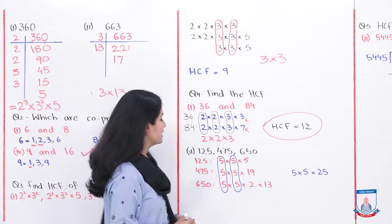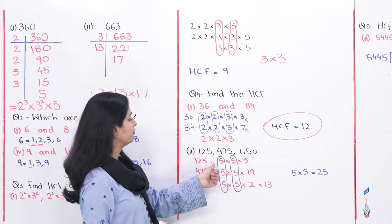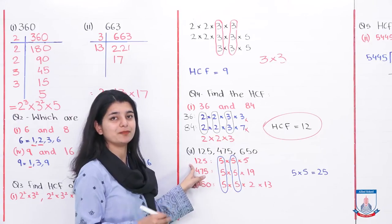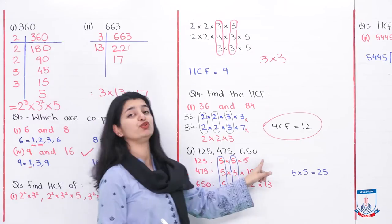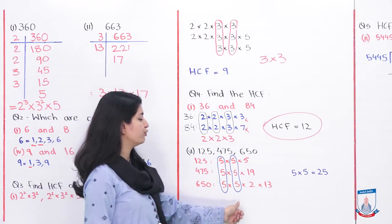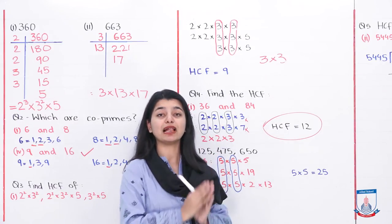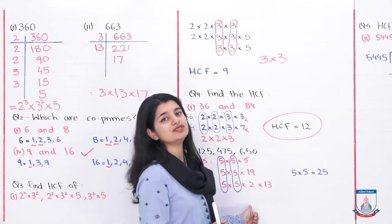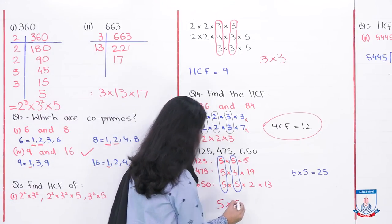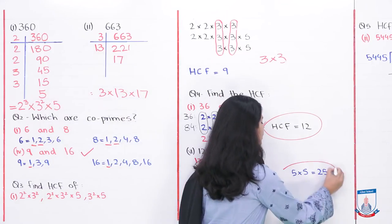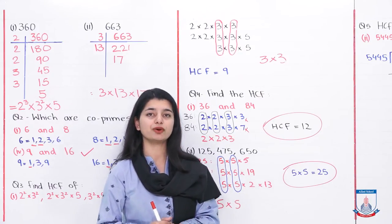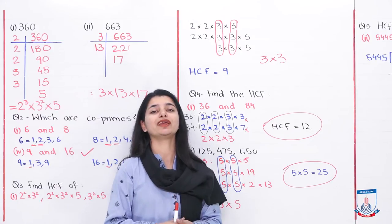Let's look at one more example in part 6: 125, 475, and 650 — three numbers are given. Find the prime factors of each: 125 = 5 × 5 × 5; 475 = 5 × 5 × 19; 650 = 5 × 5 × 2 × 13. When you have all three sets of prime factors, circle the common ones. The factor 5 appears twice in all three numbers. So 5 × 5 is the HCF, which is 25. That's how we calculate the HCF of these three numbers.